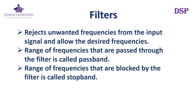First of all, we want to know what filters are. Basically, an electronic filter is one which performs signal processing by rejecting or removing the unwanted frequencies from the input signal and allowing the desired frequencies at the output. The range of frequencies that are passed through the filter is called the passband, and the range of frequencies that are blocked by the filter is called the stopband.